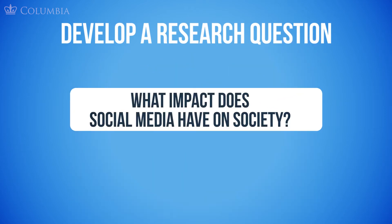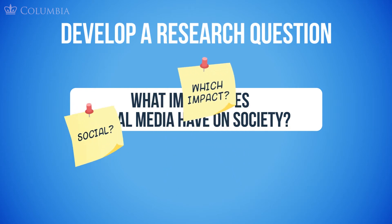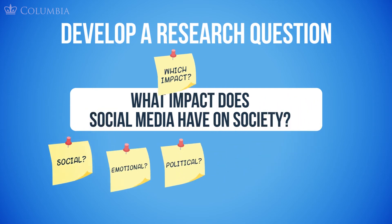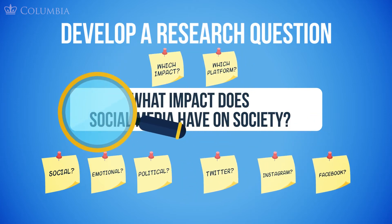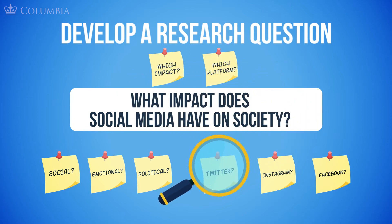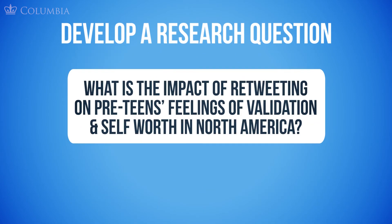Take, for example, this question: What impact does social media have on society? As interesting as this may sound, it's too broad. You have to decide which impact you are trying to address — is it social, emotional, or political? And which social media platform are you exploring — Twitter, Instagram, or Facebook? To narrow down your focus, consider demographics, geography, and the specific type of social media. Here's what that research question could look like: What is the impact of retweeting on preteens' feelings of validation and self-worth in North America? By introducing a demographic of preteens, the geographic region of North America, the social media platform Twitter, and the emotional impact of validation and self-worth, this question has become more focused and manageable to answer.